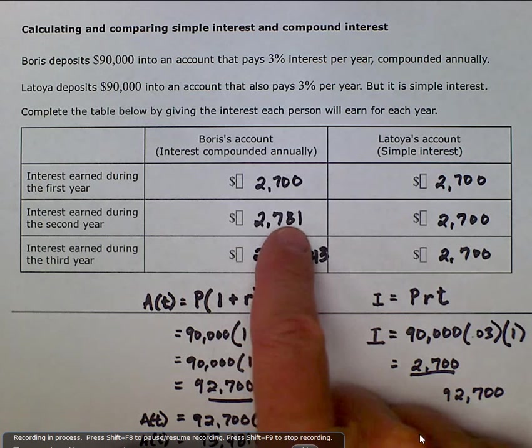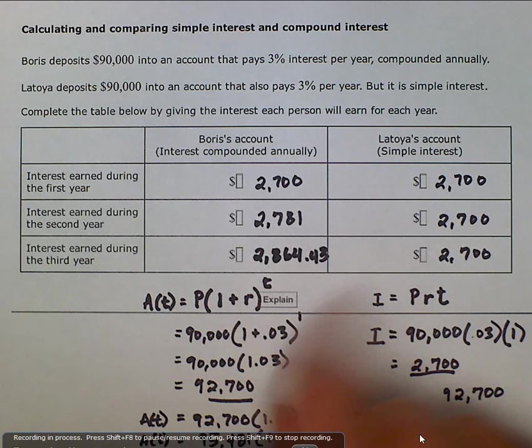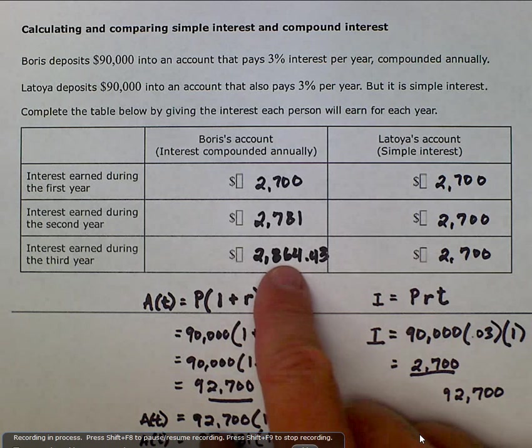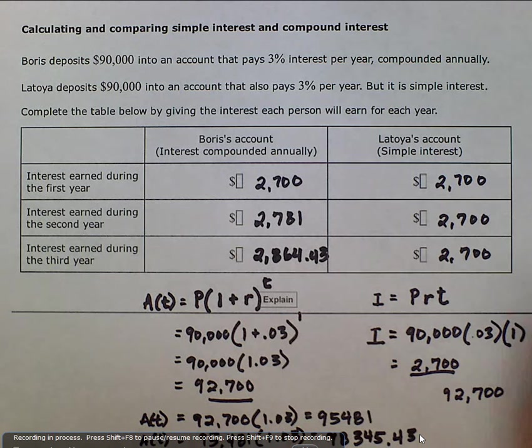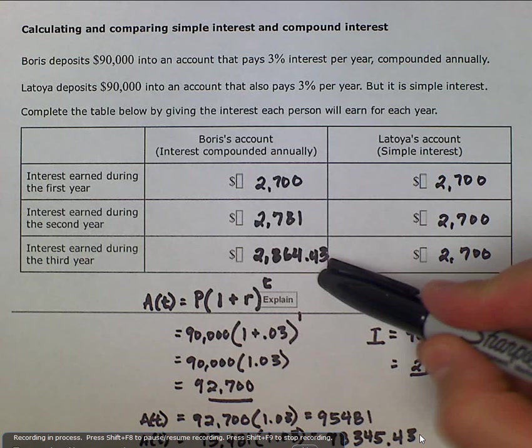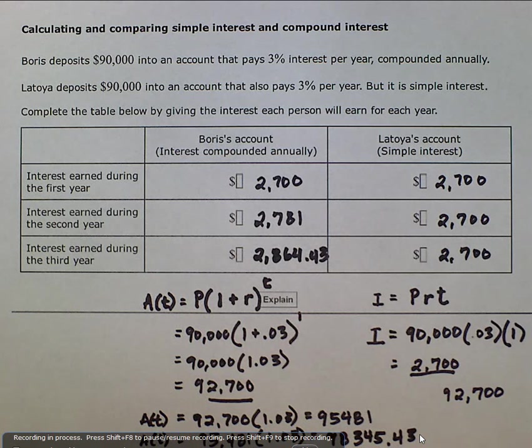At the second year, it was only a difference of 81, but now we have a difference of 164, and it will continue to go up and increase and create a bigger separation here. As a matter of fact,